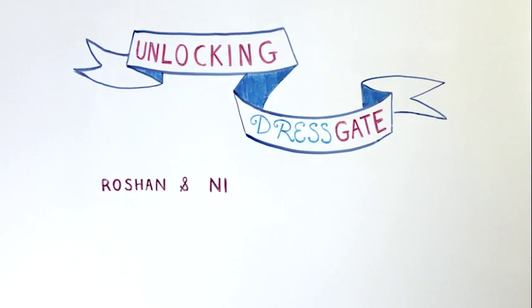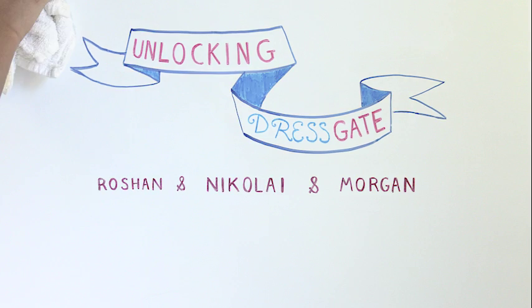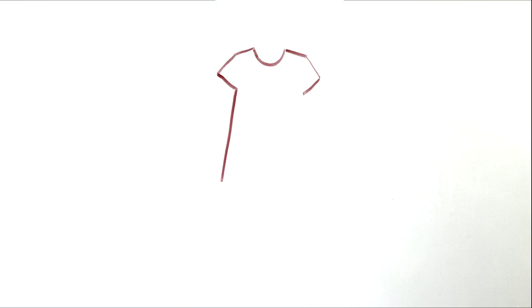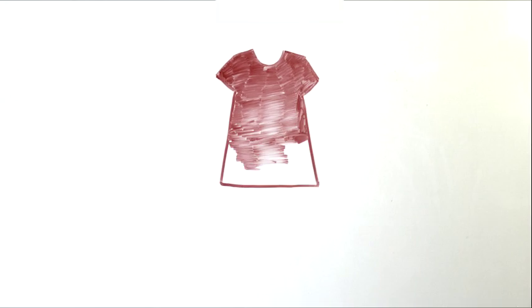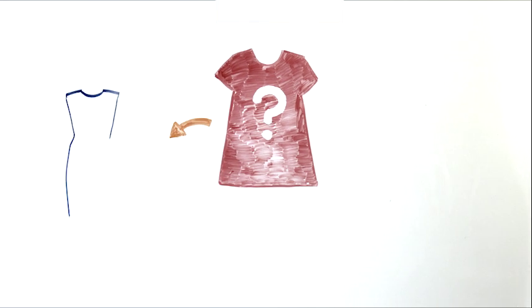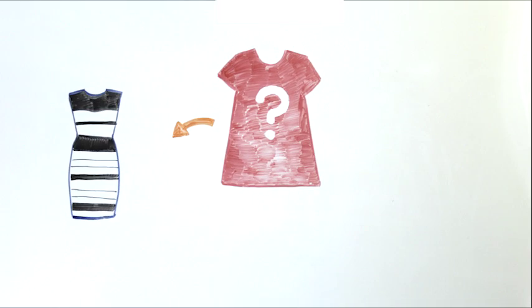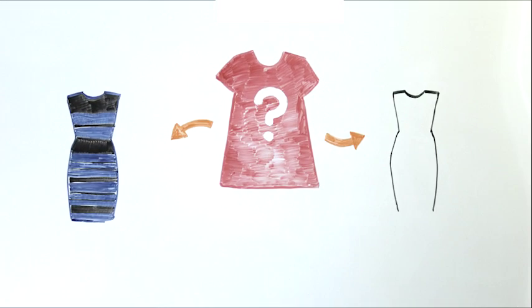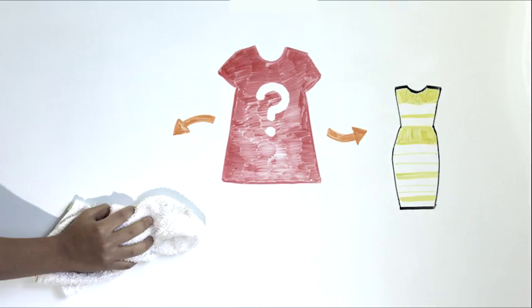We've all heard of the dress that broke the internet. Back in early 2015, an image of a dress became a viral sensation as internet viewers began to divide on the issue of the dress's color. Some claim that it appears to be blue and black, and others say that it is actually white and gold.